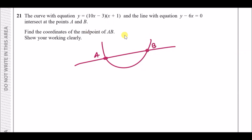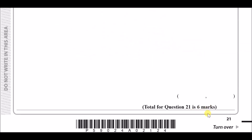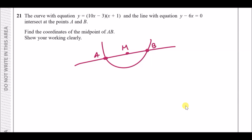Find the midpoint M of AB. When a curve and a line intersect, you solve them simultaneously. Doing so gives you a pair of x and y coordinates — one being A and one being B — and then from those you can find the midpoint. This is a six-mark question.